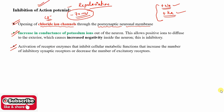The second factor is increasing conductance of potassium out of the neuron. The sodium-potassium pump works — three sodium ions out and two potassium ions in — this increases the negativity of polarity. Increasing conductance of potassium out of the neuron increases negativity inside the neuron and this will inhibit the action potential. Additional factors include receptor enzymes that inhibit cellular metabolic function, increased inhibitory synaptic receptors, or decreased excitatory receptors.